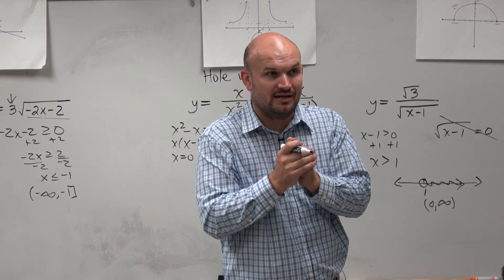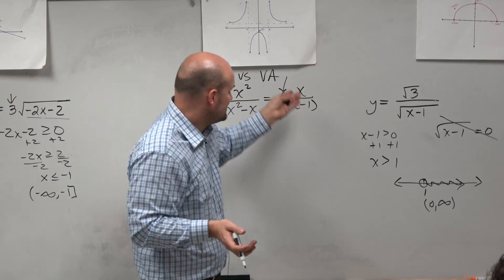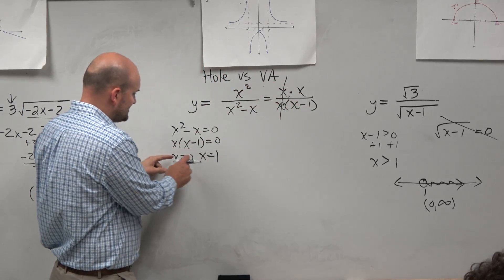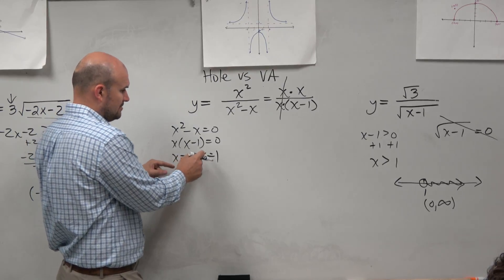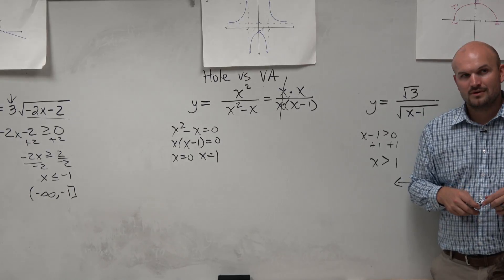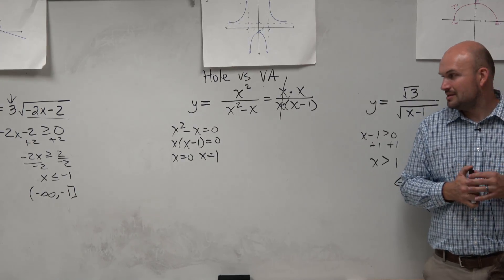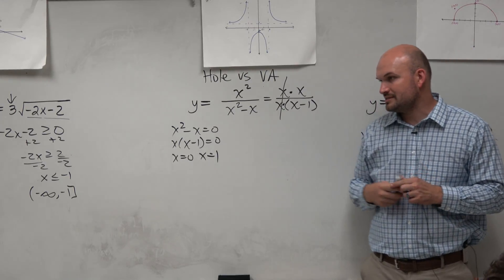So where does the hole occur, though? If x is what divided out, x made the discontinuity at what value. Was x the discontinuity at zero or at one? Where is this hole? Where? Is it at one or is it at zero? It's at one of these discontinuities.